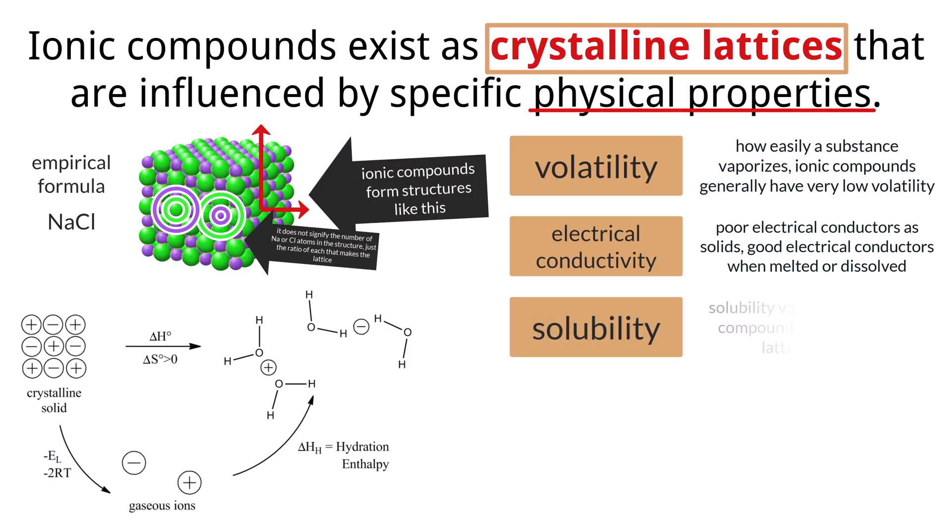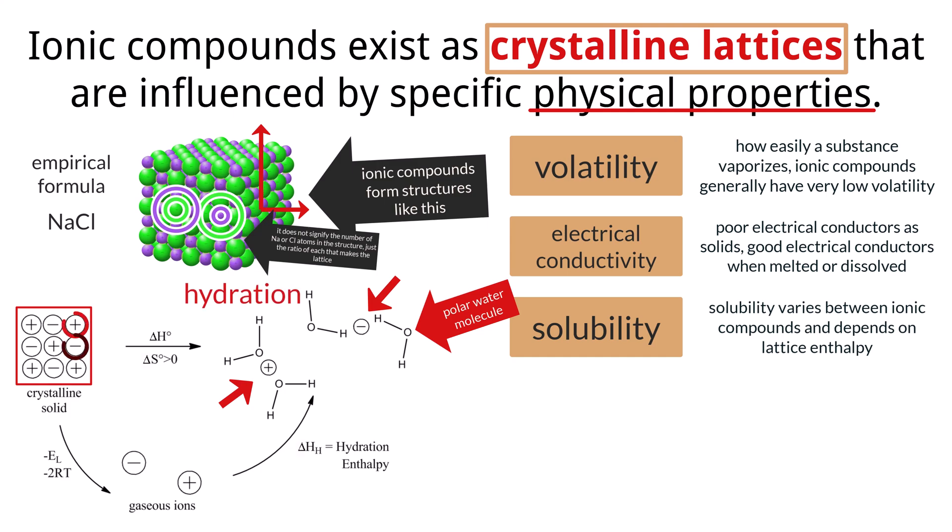The last physical property to discuss is solubility. The solubility of ionic compounds in water varies greatly. Many ionic compounds are soluble in polar solvents like water. Water molecules are polar, meaning they have a slightly positive end and a slightly negative end. These polar water molecules can surround the ions in the crystal lattice, with the positive ends attracted to the anions and the negative ends attracted to the cations. This process, called hydration, can overcome the lattice energy holding the ions together, allowing the ions to separate and dissolve in the water. However, some ionic compounds have very strong lattice energies and are not easily dissolved in water.